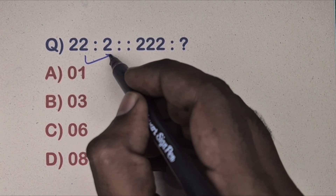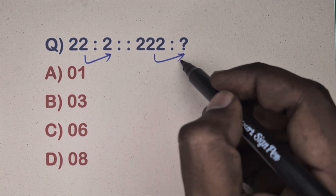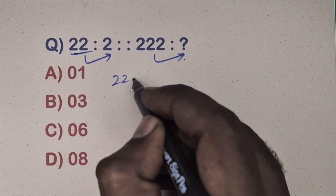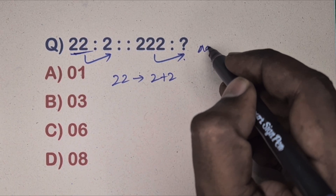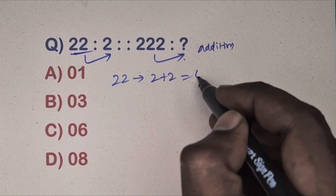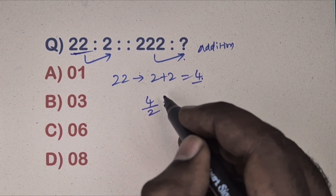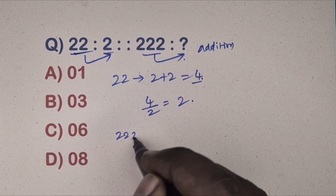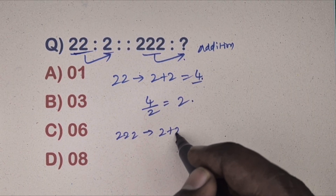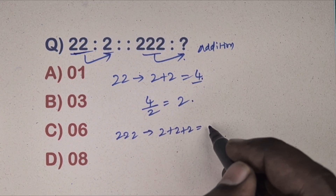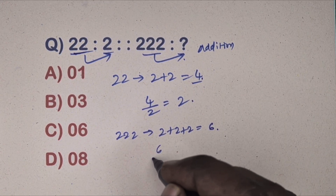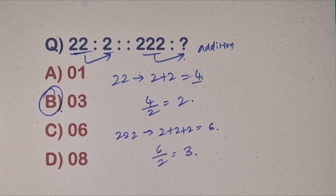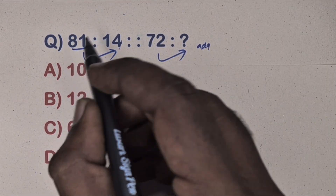Next question: 22 is related to 2, and 222 is related to which number? Options are given. Find the relation — take 22: add the digits, 2 plus 2 equals 4, then 4 divided by 2 equals 2, which is there. Same way, take 222: add the digits, 2 plus 2 plus 2 equals 6, then 6 divided by 2 equals 3. Option B is the correct answer.